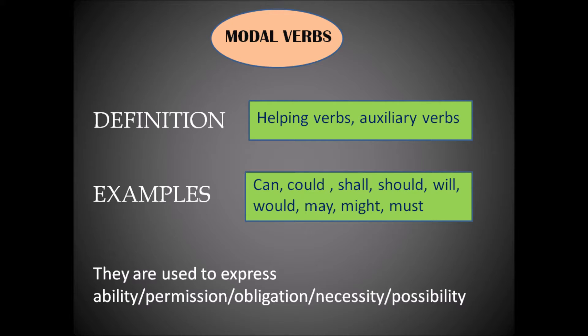Here is a list of modal verbs in English: can, could, shall, should, will, would, may, might, and must. We'll be covering each of these with examples. The first category of modal verbs shows the ability of a person or a thing to do something, and these are 'can' and 'could'.